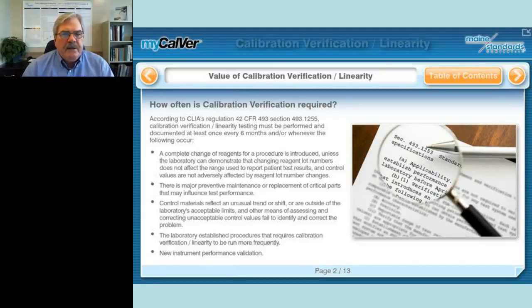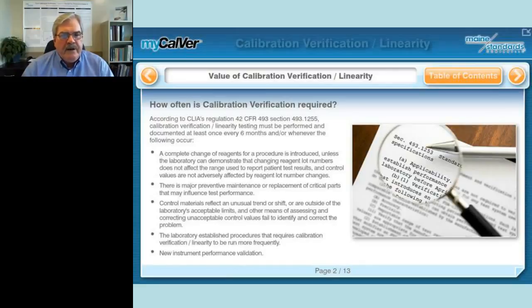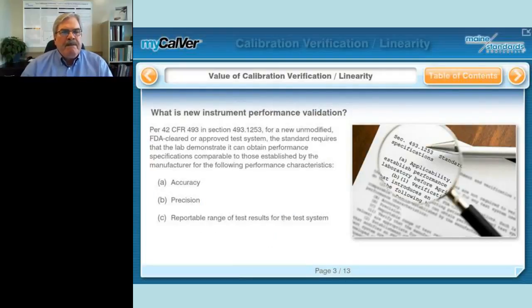You also need to do calibration verification if you have major preventive maintenance or replace critical parts, if your control materials suddenly behave unusually and are outside the established range and normal troubleshooting doesn't solve the problem, if your laboratory has a written procedure requiring calibration verification linearity testing more frequently than every six months, and as part of new instrument performance validation. According to the regulations, if you put in a new unmodified FDA-cleared test system, you must demonstrate that you can obtain performance specs comparable to those established by the manufacturer for accuracy, precision, and reportable range.